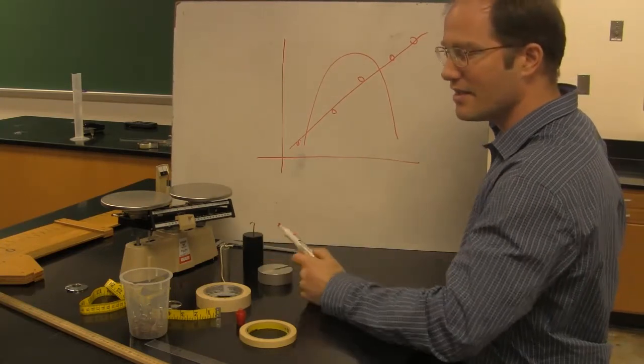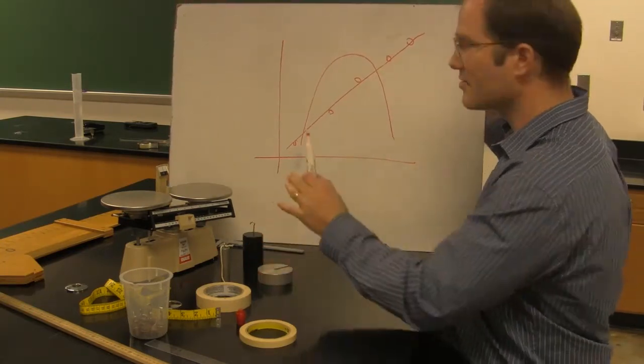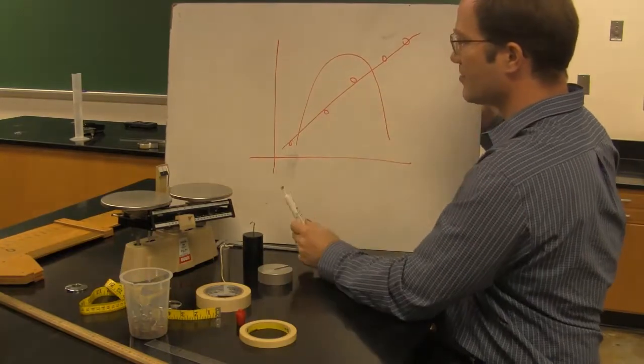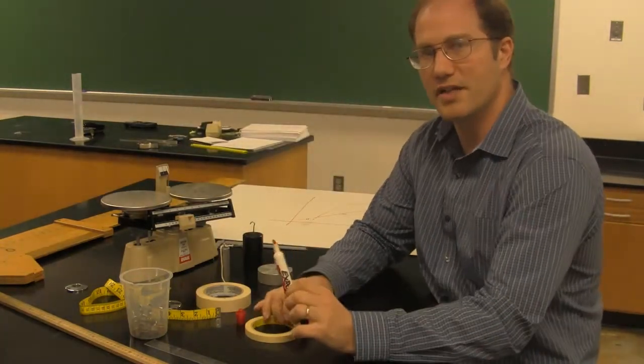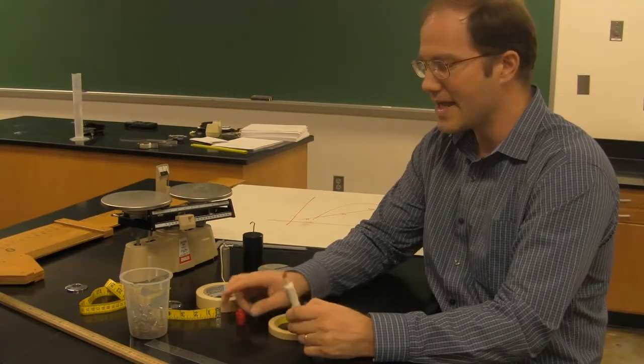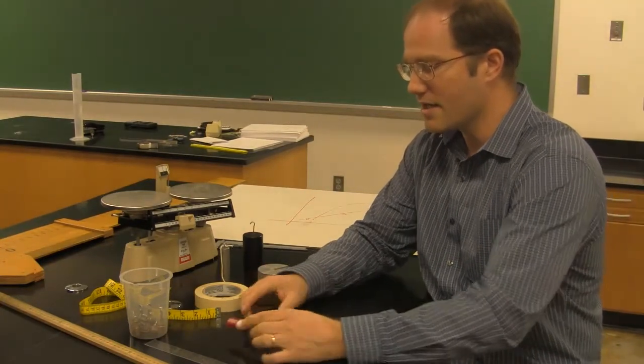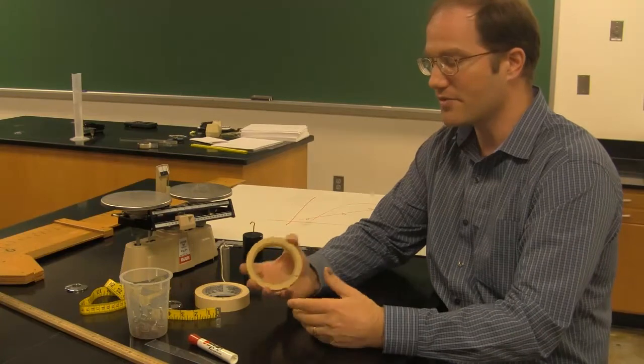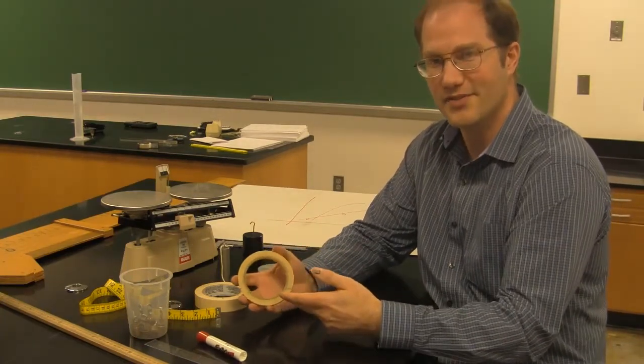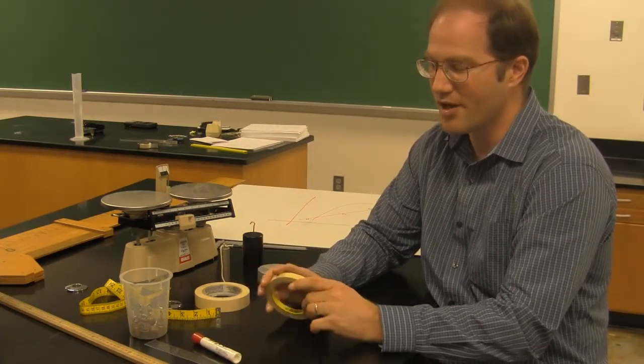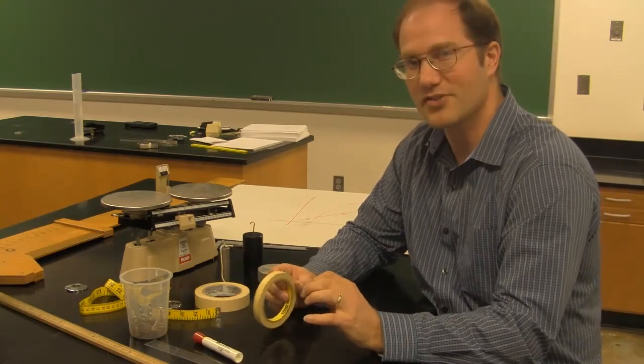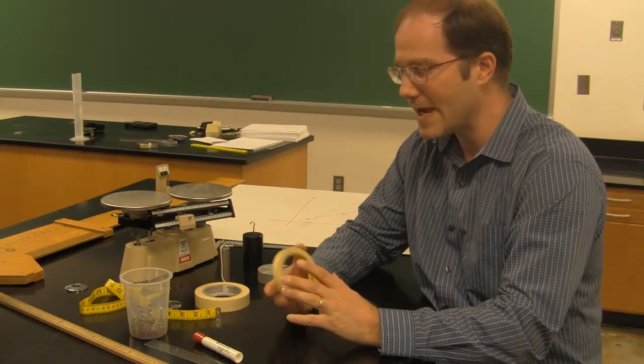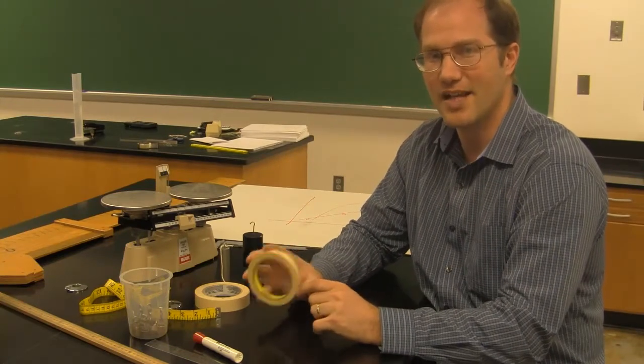By graphing variables against each other, and these variables come from data that you acquire in an experimental laboratory setting, you can make mathematical models of the relationship between these two items that you put on your axis. In today's lab, we're going to look at the relationship between two variables: the diameter of a circular object and the circumference of a circular object.